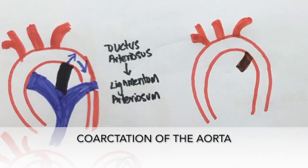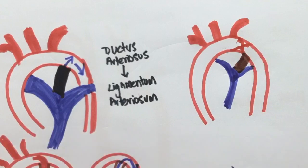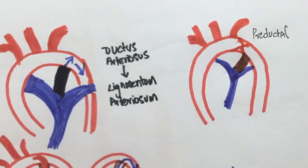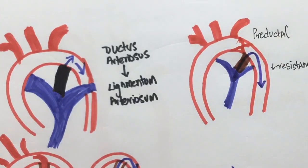Coarctation of the aorta also has the potential to cause differential cyanosis, but this is more common in children. This is because in children, the coarctation is pre-ductile. That is, the constriction of the aorta happens before the ductus arteriosus. Due to the low resistance here, blood from the pulmonary artery flows this way and causes cyanosis in the lower parts of the body.